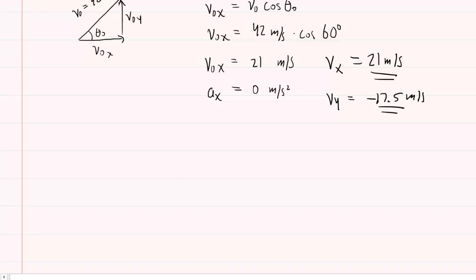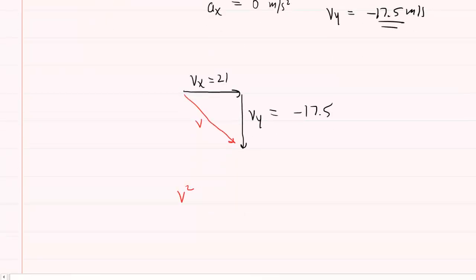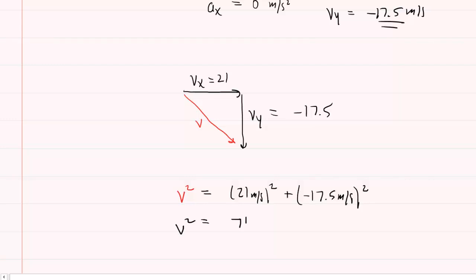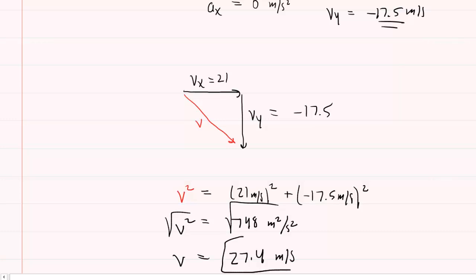Now it's time to apply the Pythagorean theorem. We have the final x-velocity of 21 meters per second and the final y-velocity of negative 17.5 meters per second. So v squared equals 21 meters per second squared plus negative 17.5 meters per second squared. Working that out gives approximately 748 meters squared per second squared. Taking the square root of both sides, you end up with a speed of 27.4 meters per second. This is the correct answer to part B.